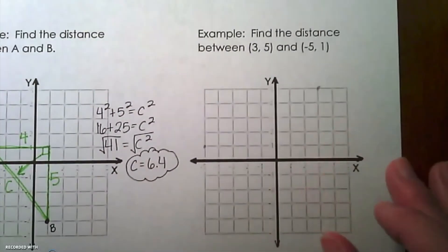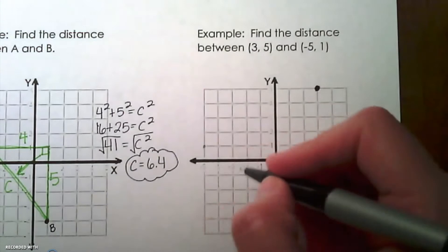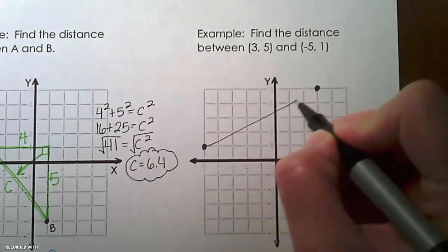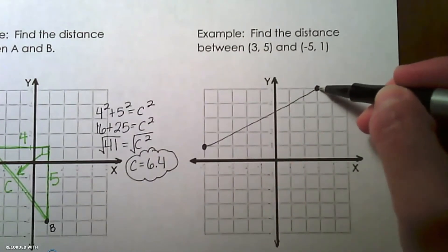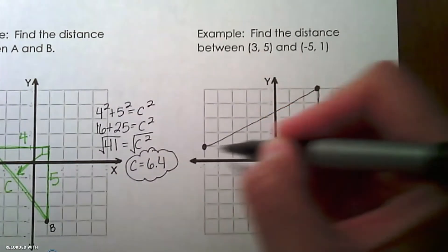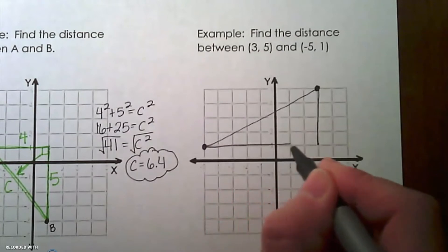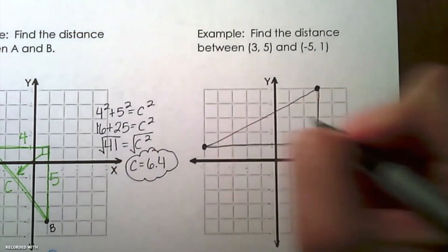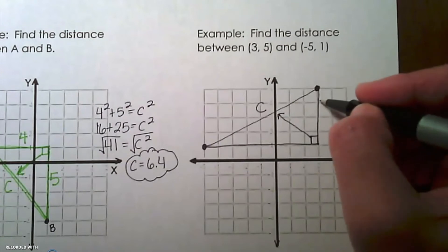For the next example, find the distance between (3, 5) and (-5, 1). We connect those two points, then draw a vertical line from the top point down to where it aligns with the other given point. Then draw a horizontal line from the other point until it connects with the vertical line — there's our 90-degree angle. The side opposite the right angle is the hypotenuse.